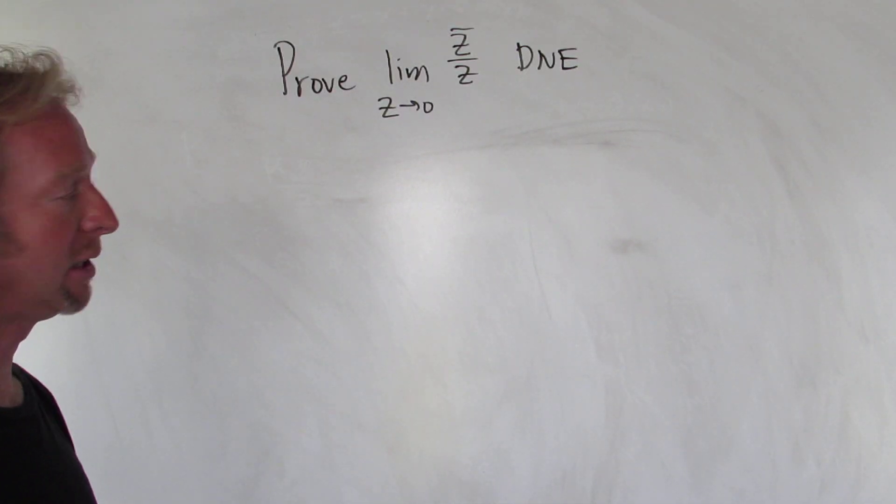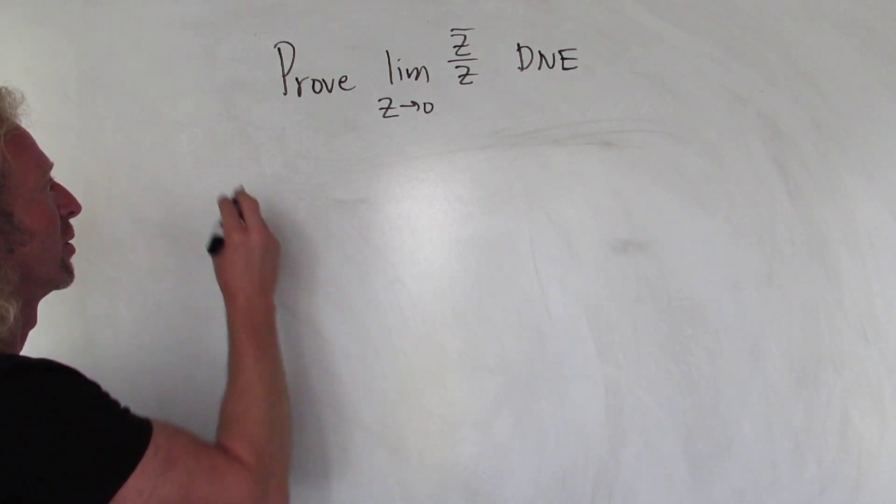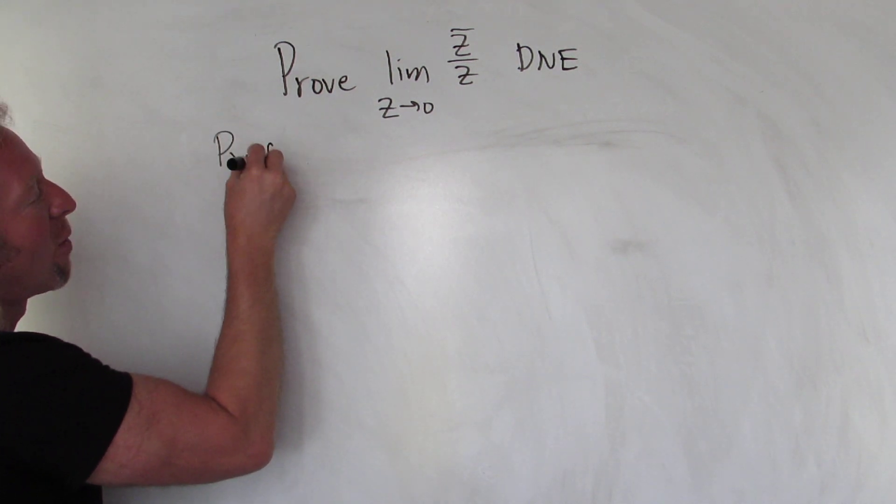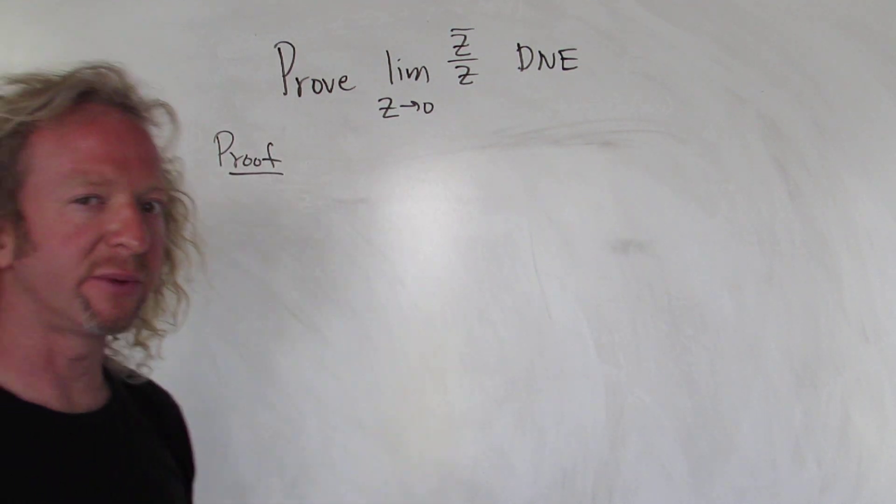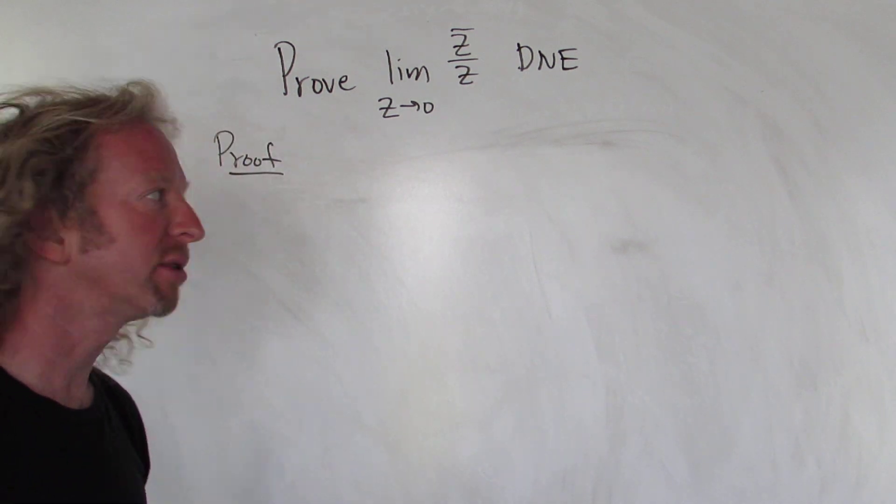Hey everyone, in this video we're going to prove that this limit does not exist. Okay, so proof. Before we do the proof, let me clarify some things here. Z here is a complex number.